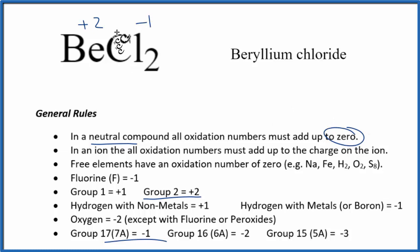And all these should add up to zero, so we can check that. We have plus two here, and then two times minus one, that's minus two. Plus two, minus two, adds up to zero.